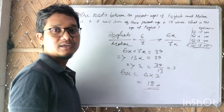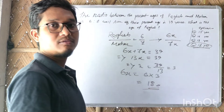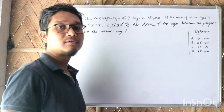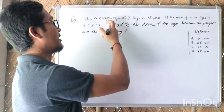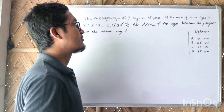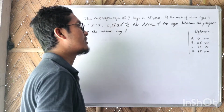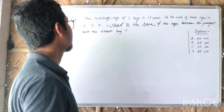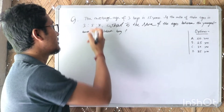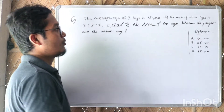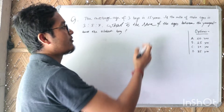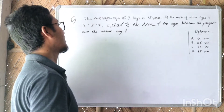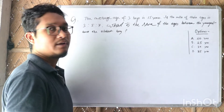Okay, it's very simple. Now the next question: the average age of three boys is fifteen years. If the ratio of their ages is 3 to 5 to 7, what is the sum of the ages of the youngest and the oldest boy?